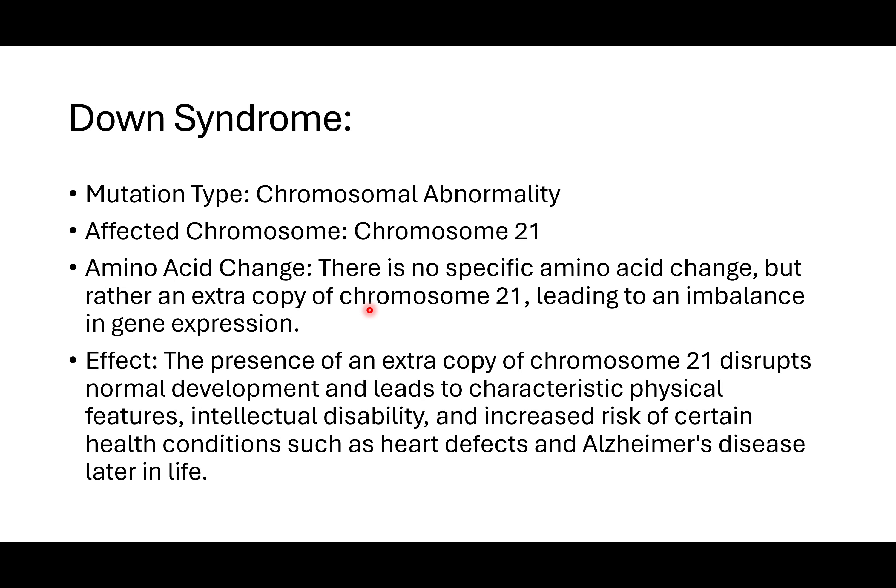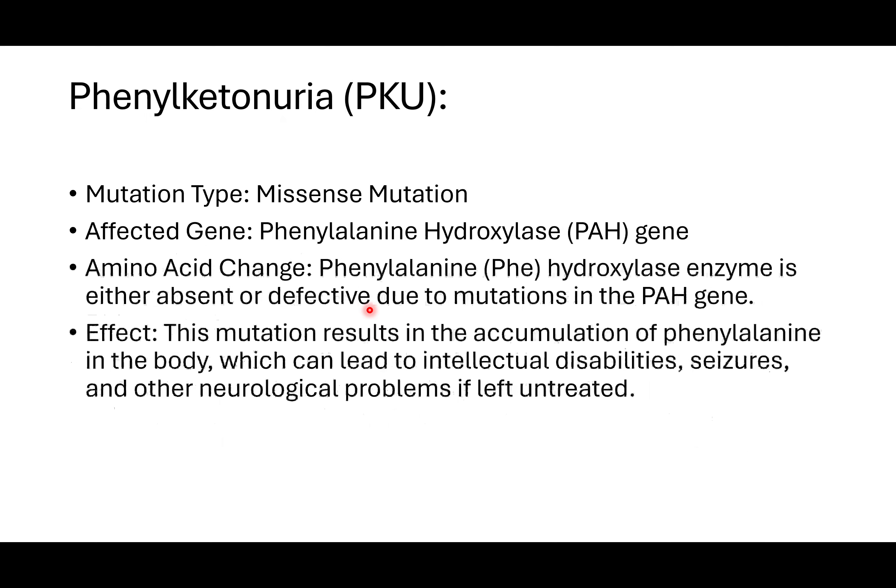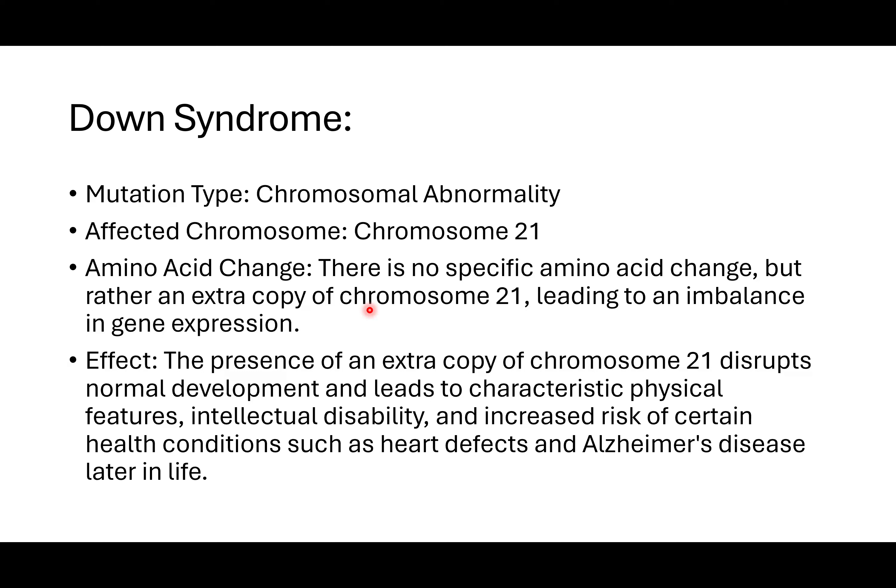Down syndrome is a chromosomal mutation affecting chromosome 21. Unlike point mutations, there is no specific amino acid change — rather, there is an extra copy of chromosome 21, leading to an imbalance in gene expression. The presence of this extra chromosome disrupts normal development and leads to characteristic physical features, intellectual disabilities, and an increased risk of certain health conditions such as heart defects and Alzheimer's disease later in life.